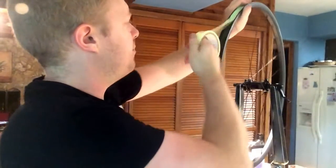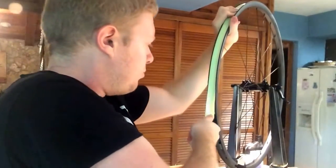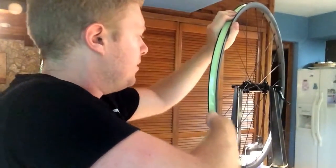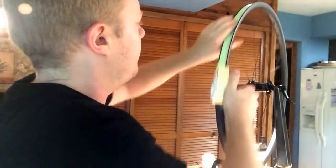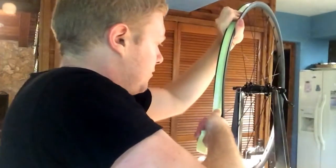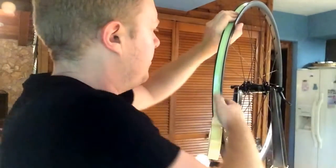Just continue pulling the tape around. Notice I like to use my trailing finger just to kind of press the tape down into the rim bed a little bit better. It helps reduce air bubbles, but just want to get this as tight as you can on there.